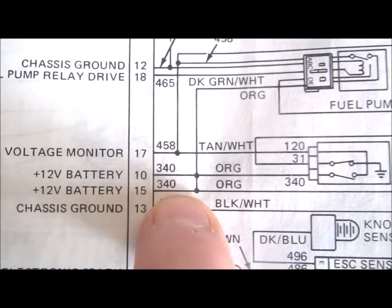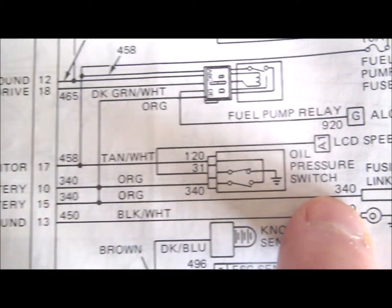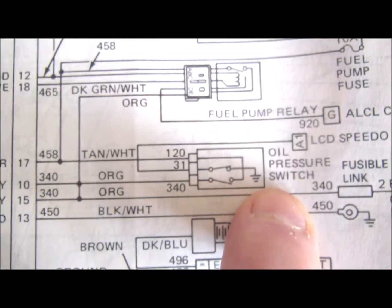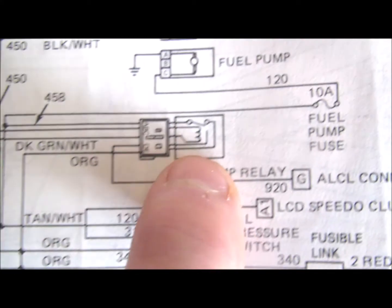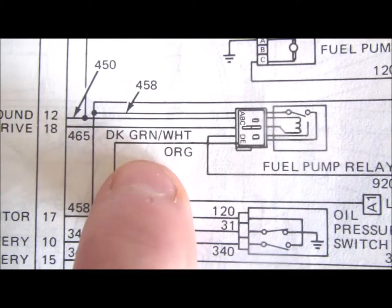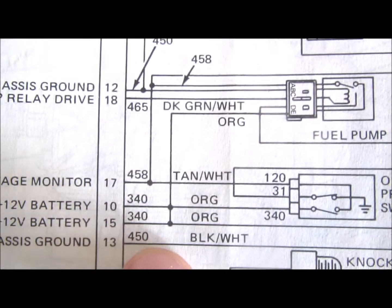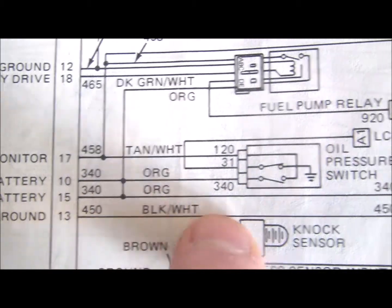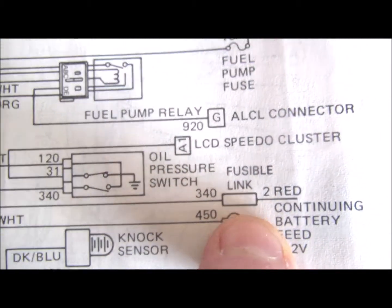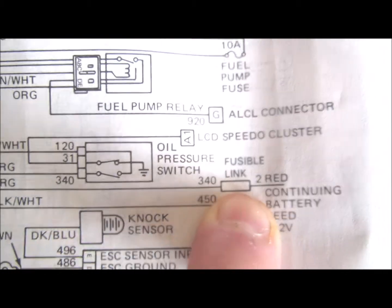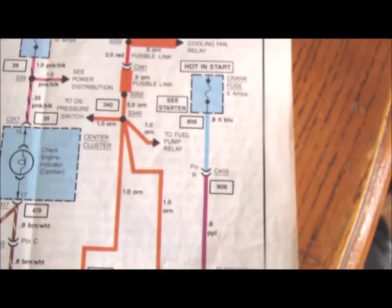You have the oil pressure switch. And you also have the fuel pump relay. It comes right off of 340. That's the fusible link. That's the main fusible link for the entire car. Almost everything works off of that.